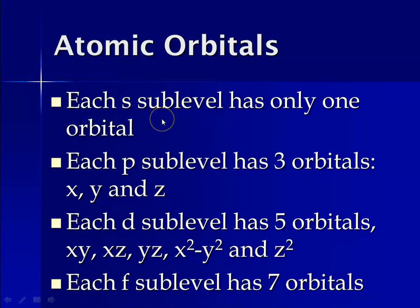Each s sublevel has only one orbital, so it has one place for the electrons to hang out. You can think of that as having one bunk bed in it. So an s sublevel has one orbital, and that one orbital can hold two electrons. You can think of that as being a bunk bed.